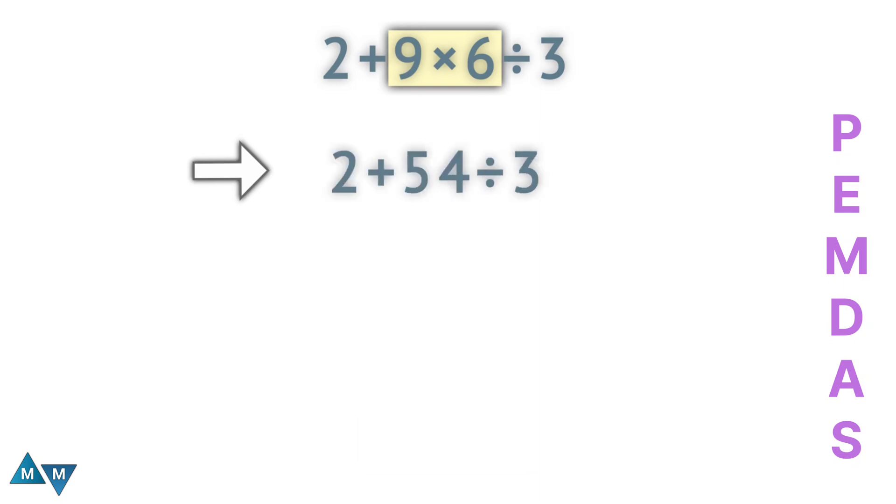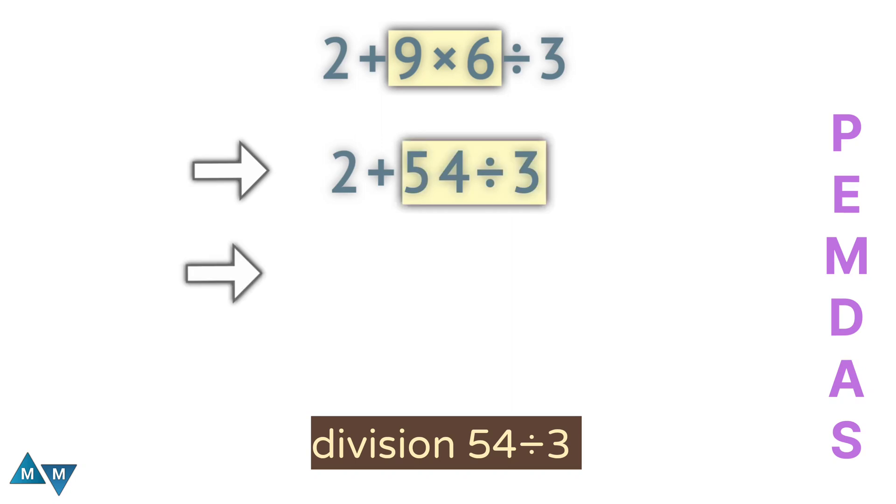Now our next move will be division, 54 divided by 3, which equals 18. Now the expression becomes 2 plus 18, which equals 20.